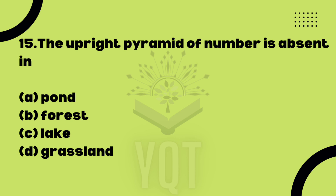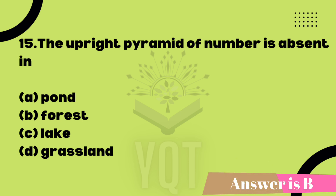The upright pyramid of number is absent in which ecosystem? In a forest ecosystem, one large tree supports many birds and insects at the trophic level above it, so the numbers do not form an upright pyramid — it is inverted. Option B, forest, is the correct answer.